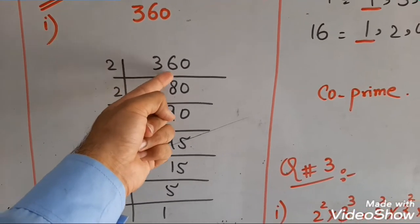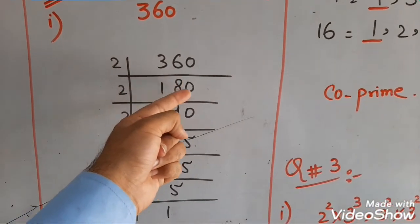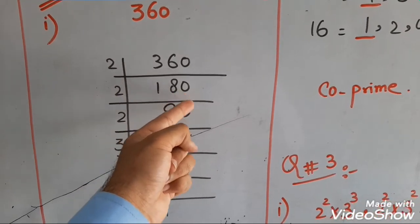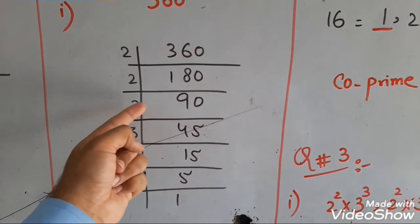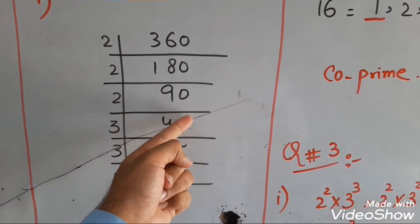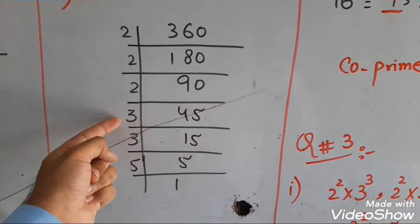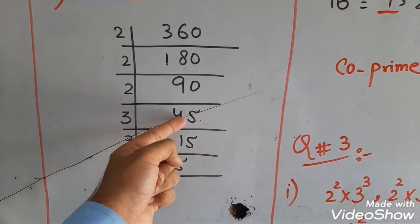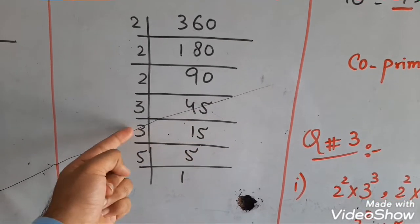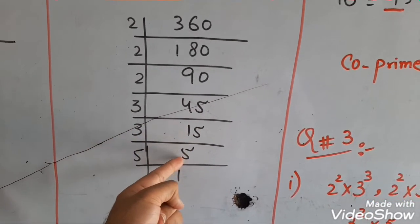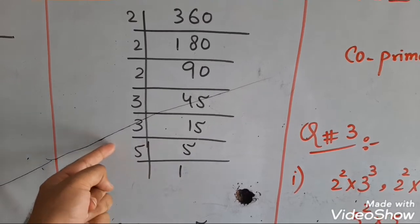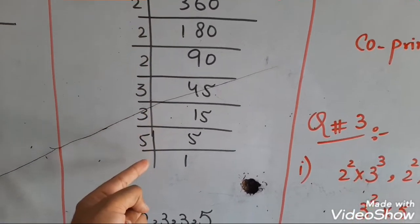2 ones are 2, 1 carry; 2 eights are 16; 2 nines are 18; 2 fours are 8, 1 carry; 2 fives are 10; 3 ones are 3, 1 carry; 3 fives are 15; 3 fives are 15 and 5 ones are 5. These are all the prime factors.